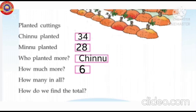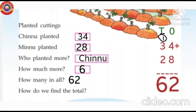Next question. How many in all? You find the total, so add the two numbers, 34 plus 28. First, we add numbers in the ones column. 4 plus 8 is equal to 12. You write 2 under the ones column and 1 carry forward. Next, add the tens column. That is 3 plus 2 plus 1 is equal to 6. The answer is 62.